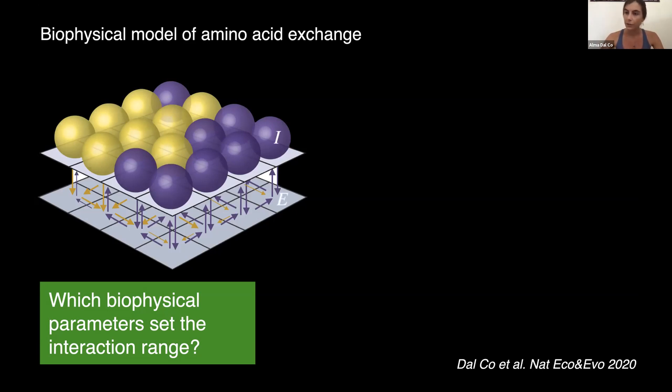At any location in space, we can keep track of the internal and external concentration of the two exchanged amino acids. And the growth rate of each single cell is a function of the limiting amino acids, the one that the cell cannot produce and has received from the partner.